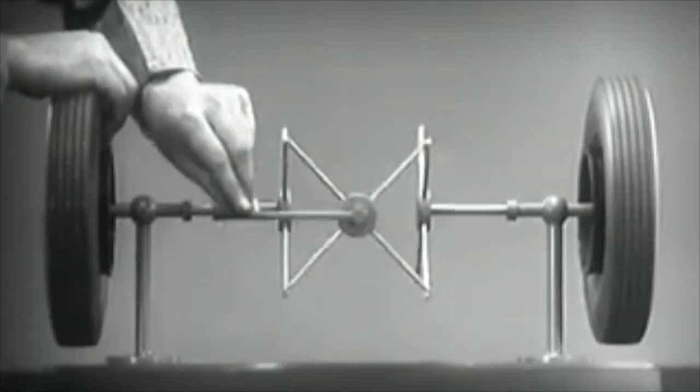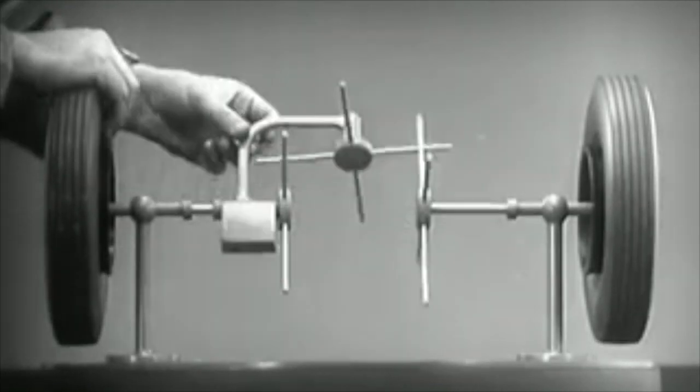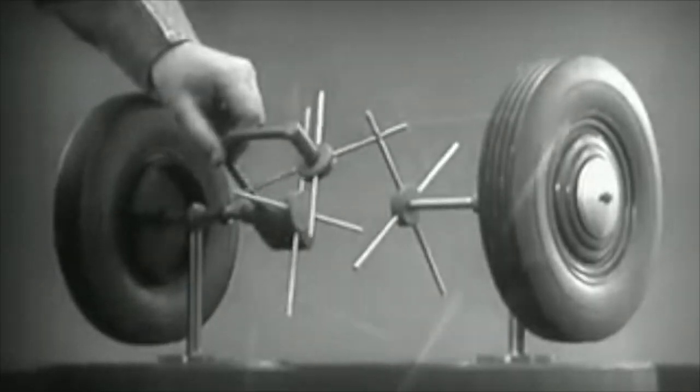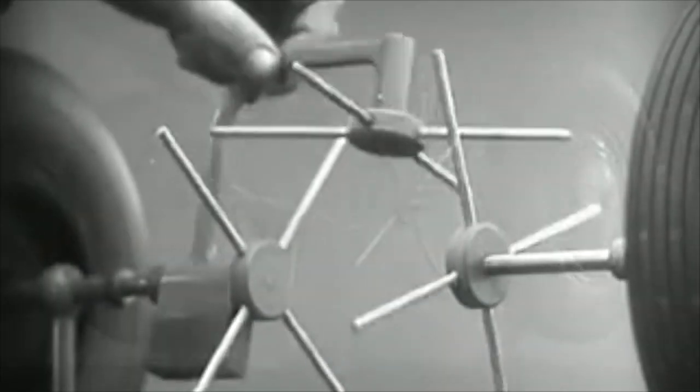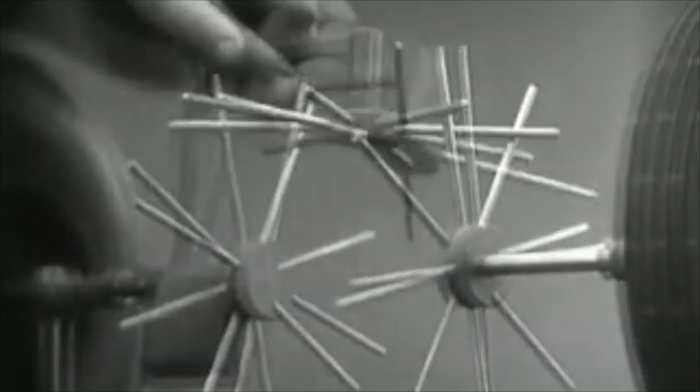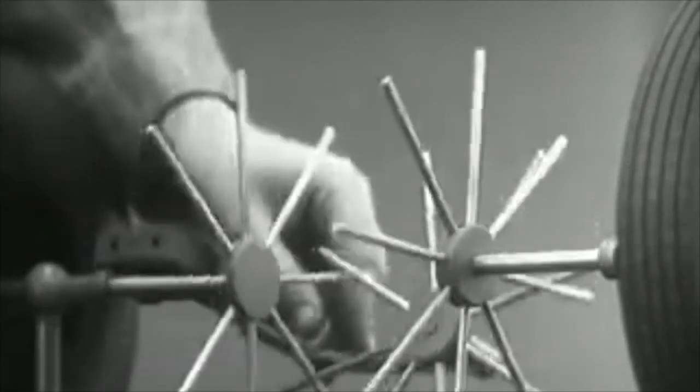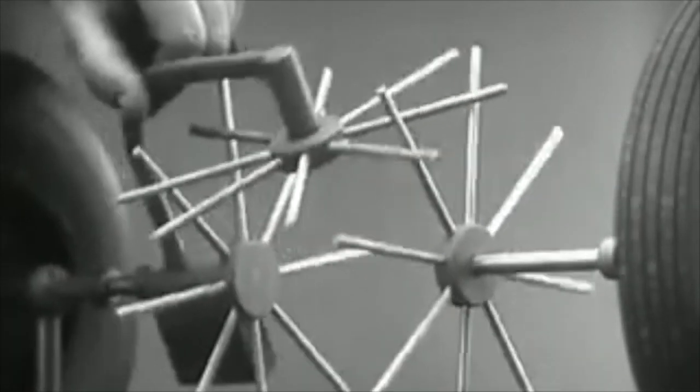To adapt the model for use in an automobile we will have to make a few changes. In order to reduce the jerky action caused by wide spaces between the spokes, we will put in more spokes.